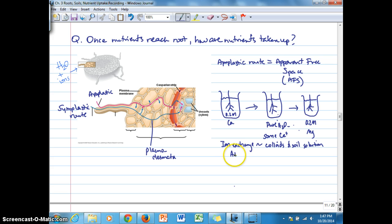In essence, the apparent free space is very synonymous or similar to colloids in that they have negatively charged surfaces. The apparent free space is surrounded by negative charges that attract those positively charged cations.